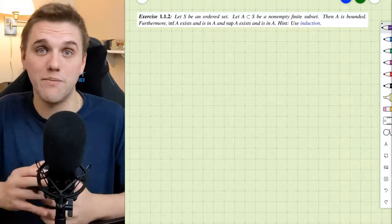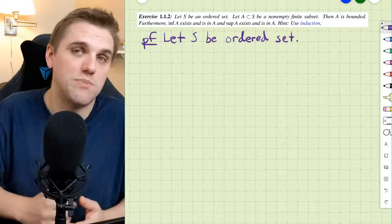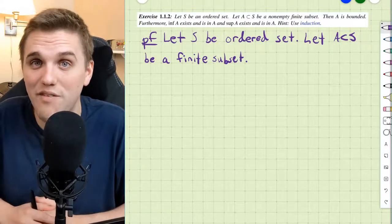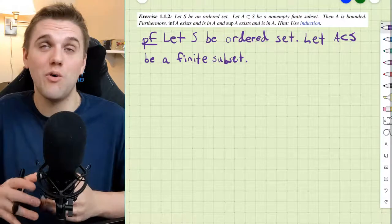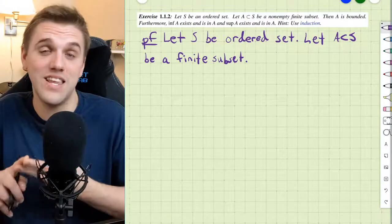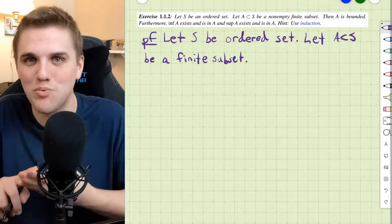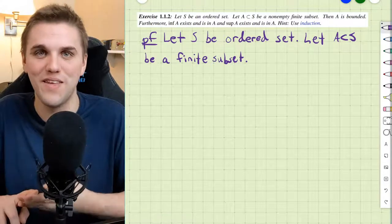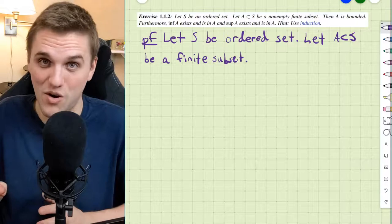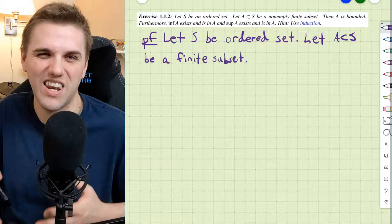Let's first list out the assumptions we're going to be using throughout this proof. We're going to let S be an ordered set, and we're also going to let A be a non-empty finite subset of S. We need to show that A is bounded, that A has an infimum and supremum, and that A contains its supremum and infimum. That's a lot to show, but it turns out we don't have to prove everything directly — we can prove some parts, and those parts will imply the rest.